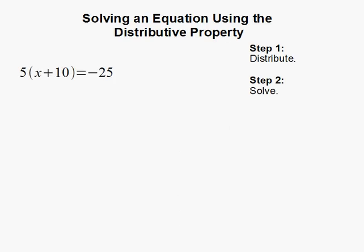Solving an equation using the distributive property. Here we have 5 times the quantity x plus 10 equals negative 25.